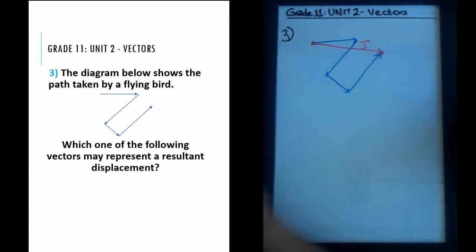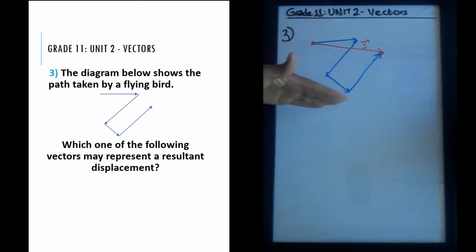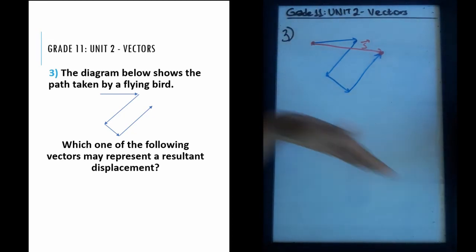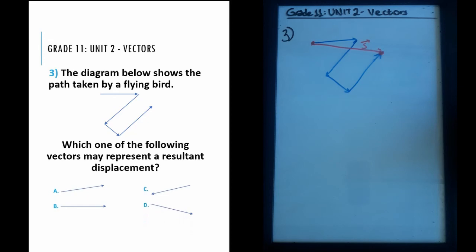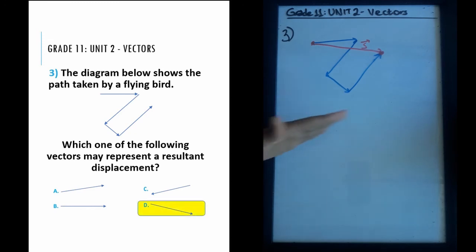Looking at the choices, we need a vector aimed slightly downward and to the right. You can place each choice vector and see if it closes off the path by connecting the tail to the head. The closest answer is choice D, which is a vector aimed slightly downward and to the right. It's as simple as that.